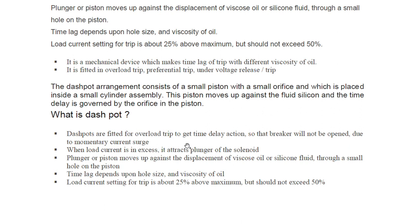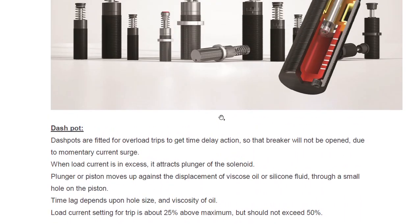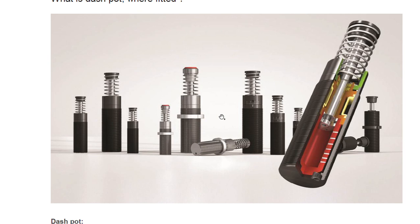To summarize: dashpots are fitted for overload trips to get time delay action so that the breaker will not open due to momentary current surges. When load current is in excess, it attracts the plunger of the solenoid; the piston moves up against the viscous or silicone fluid through the small hole. Time lag depends on hole size and oil viscosity. Load current setting for trip is about 25 percent above maximum but should not exceed 50 percent. It is a safety device with its components as discussed.